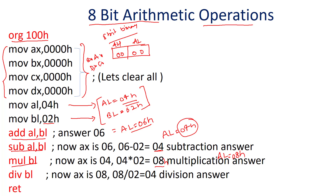The new AL value is 08H. For division, it also accesses the accumulator register by default. So 08 in the accumulator divided by BL value 02 gives 04H as the answer. This is how you write a program for 8-bit arithmetic operations.